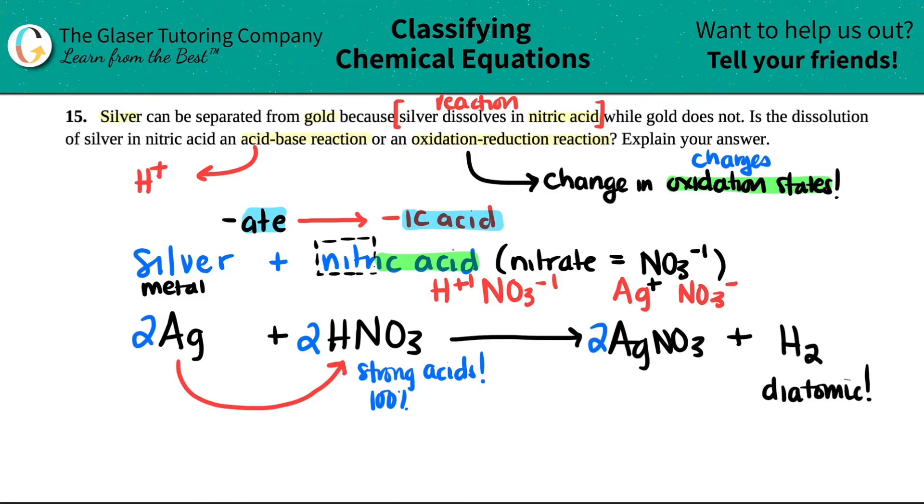But the thing here is that if we had to identify the charges, silver, all by its lonesome, there was no charge in the upper right hand corner. There was no like plus one here. There was no minus, well, it wouldn't be a minus, but like a plus two. There's no charge. So silver was a zero.